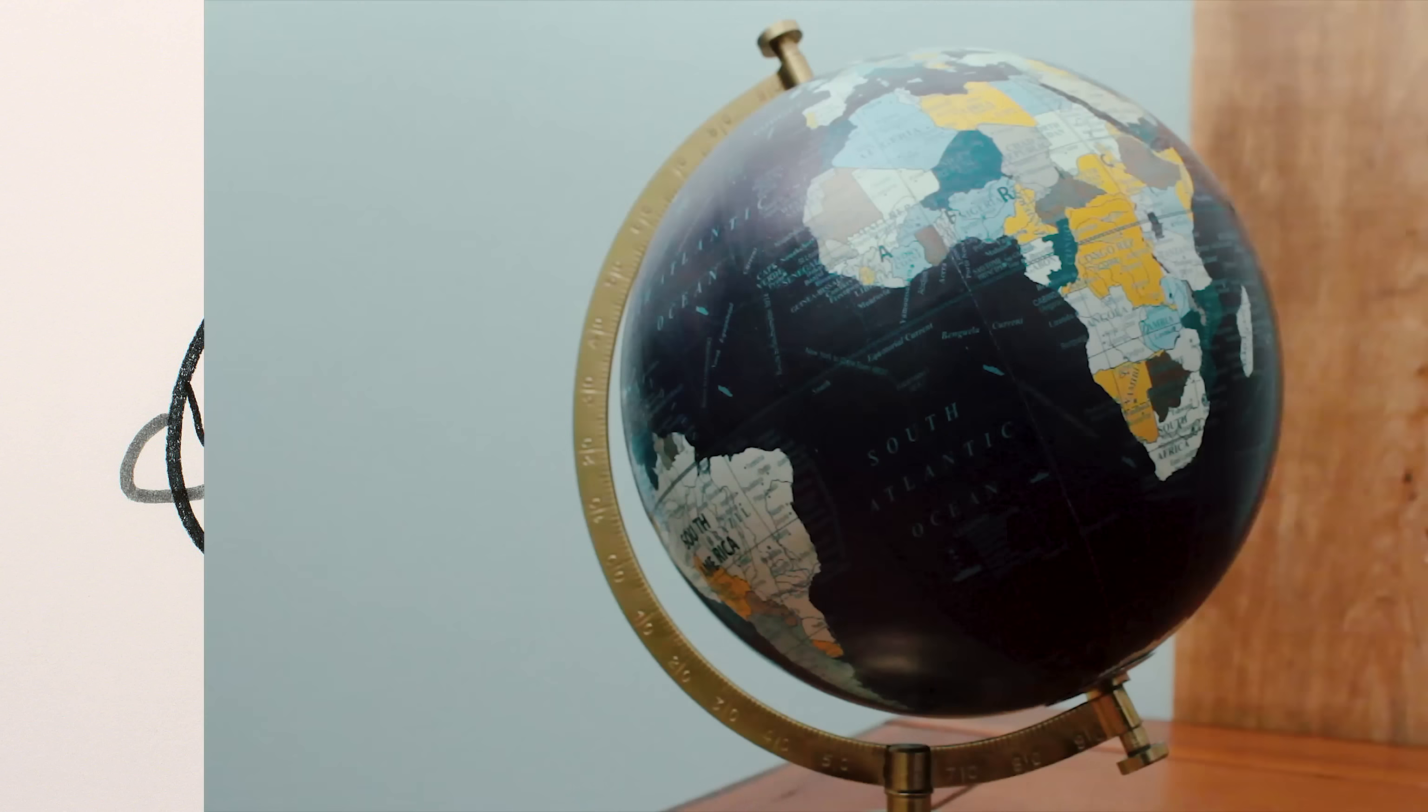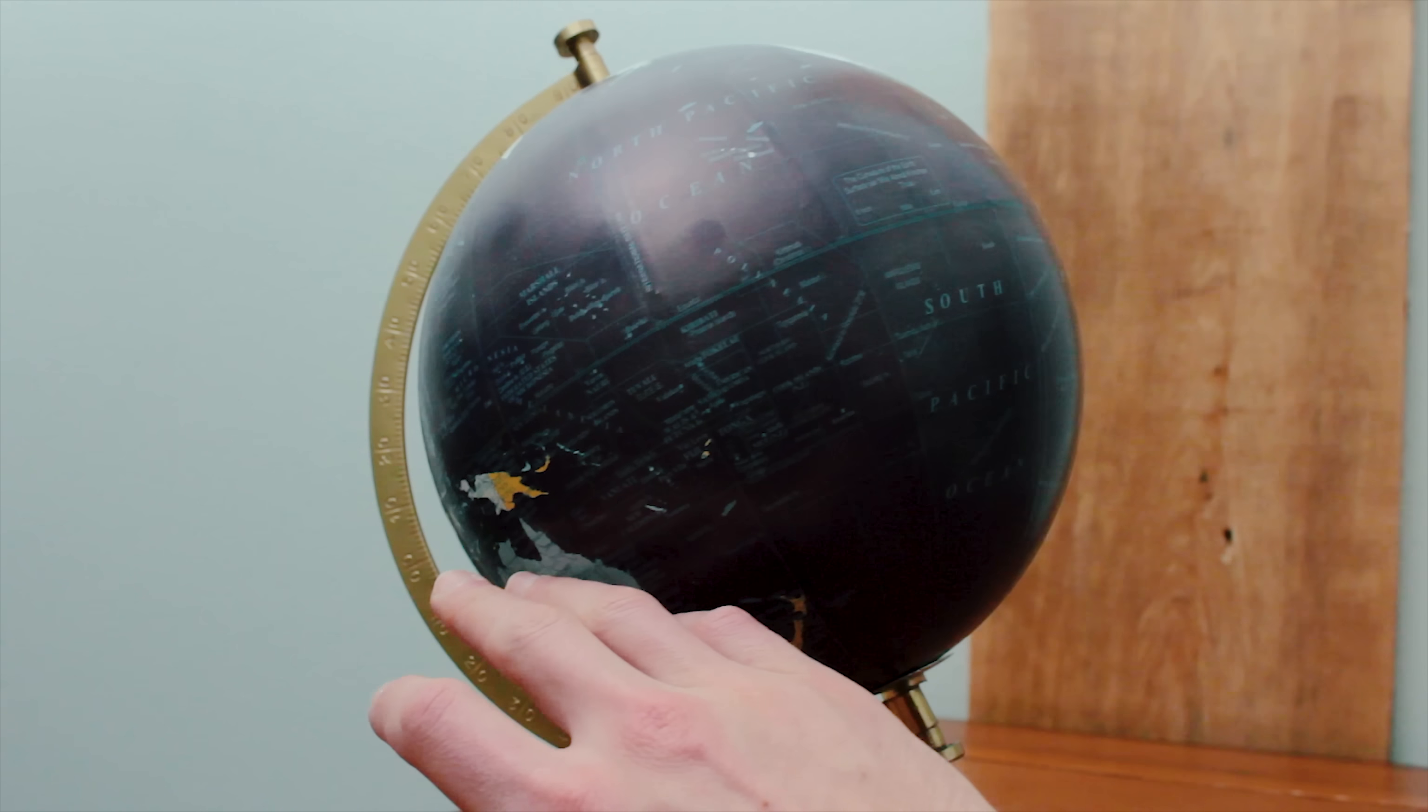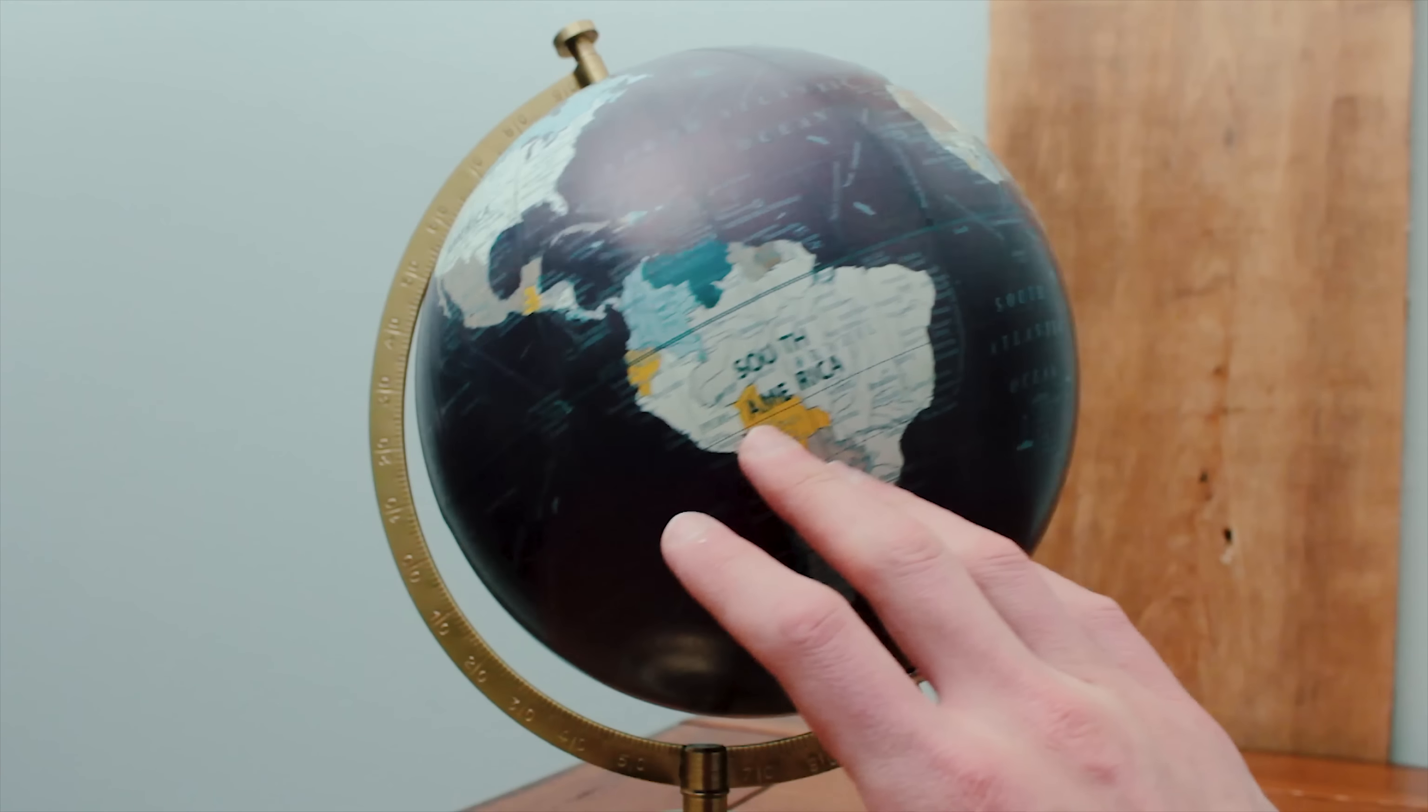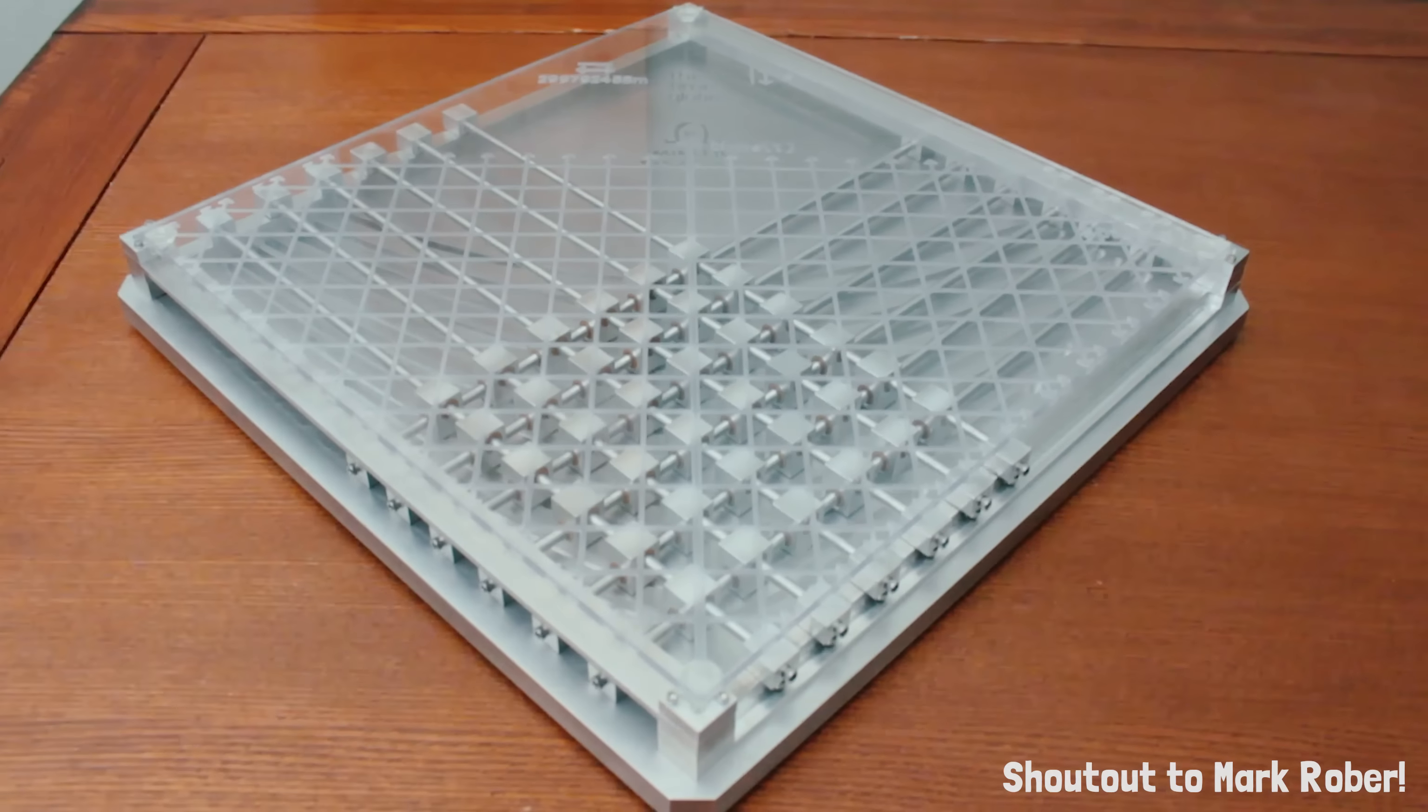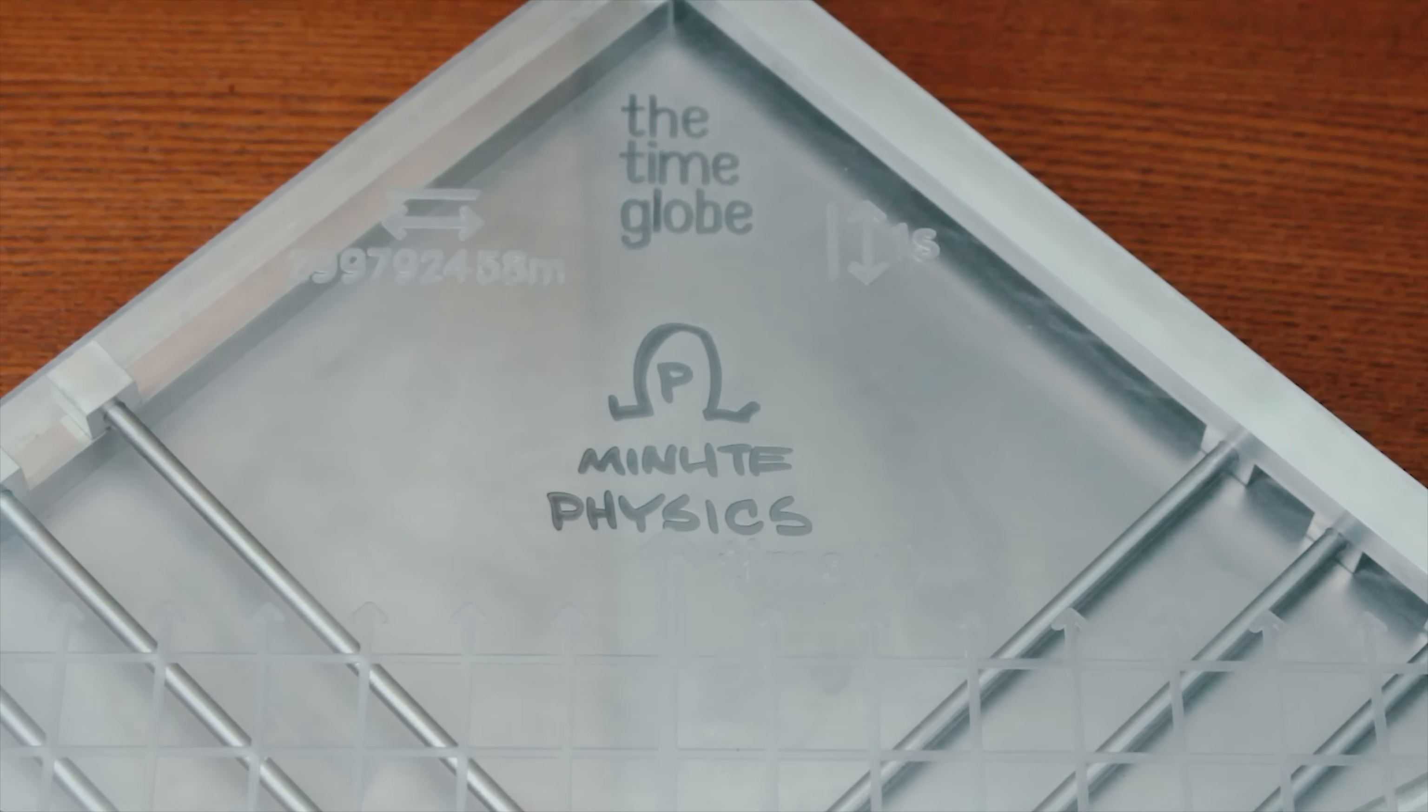In fact, we're going to take this analogy to the extreme. Just like a globe is a really useful, hands-on, visual way to explore what it means for the earth to be round, because a globe comes with roundness built in, I've designed and had built a hands-on space-time globe that has special relativity built in.